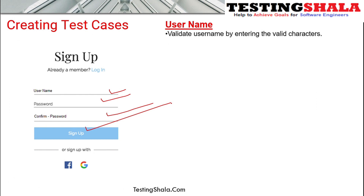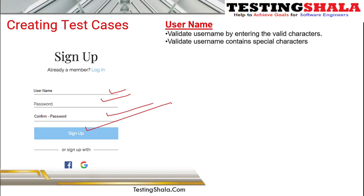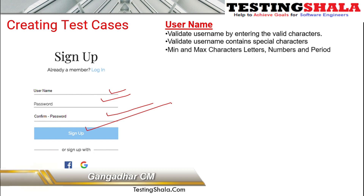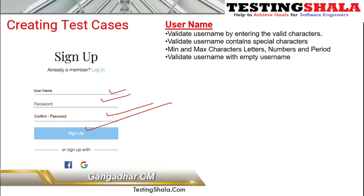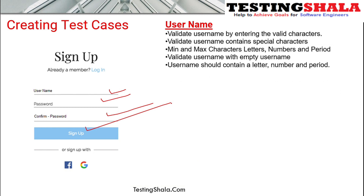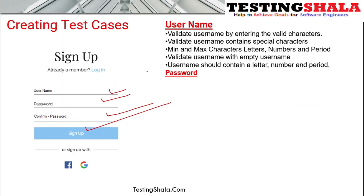The various test cases for the username field could include: valid username, invalid username, username with special characters, minimum character length, maximum character length, empty field, and username containing letters, numbers, and periods. Next, we look at test cases for the password and confirmation fields.